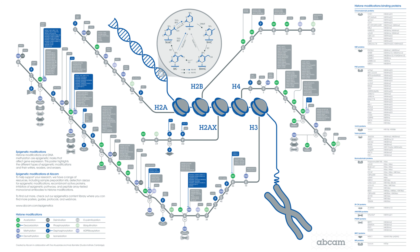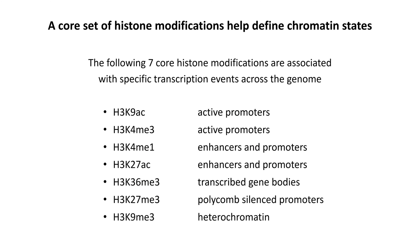When you look at the entirety of histone modifications, how can you possibly follow and understand all of this? Well, if you're new to histone modifications and more interested in gene regulation, there are actually seven core histone modifications — all on the H3 tail — which are associated with the main transcriptional events across the genome. These are the ones you should memorize, focus on, and understand. The other modifications you can put to one side for now.